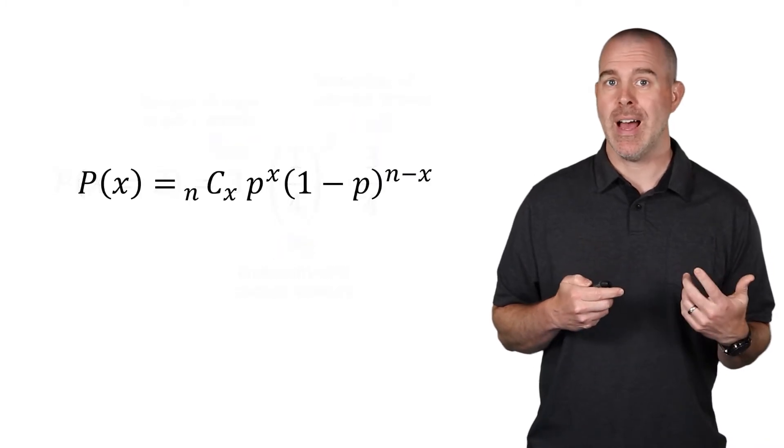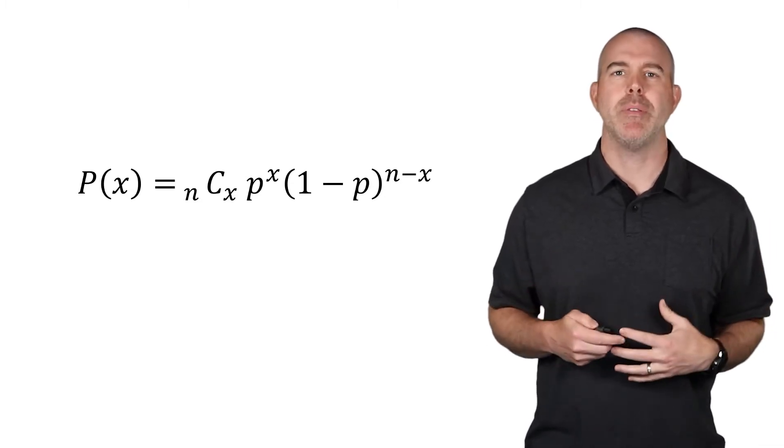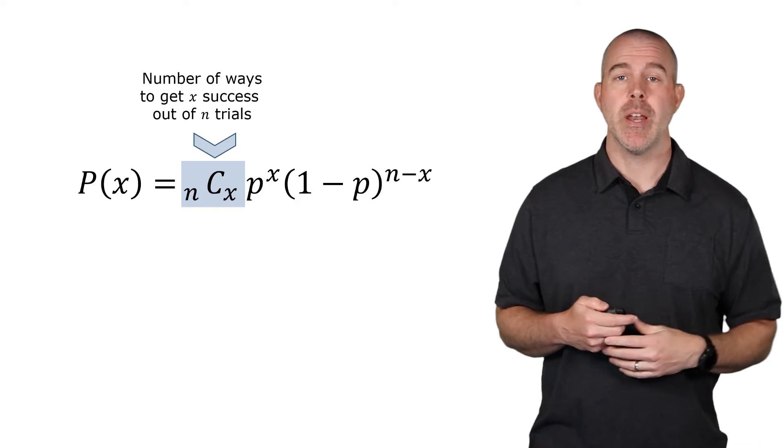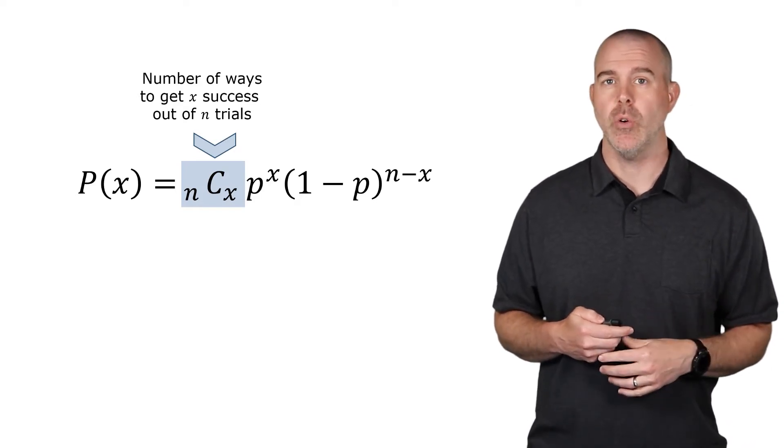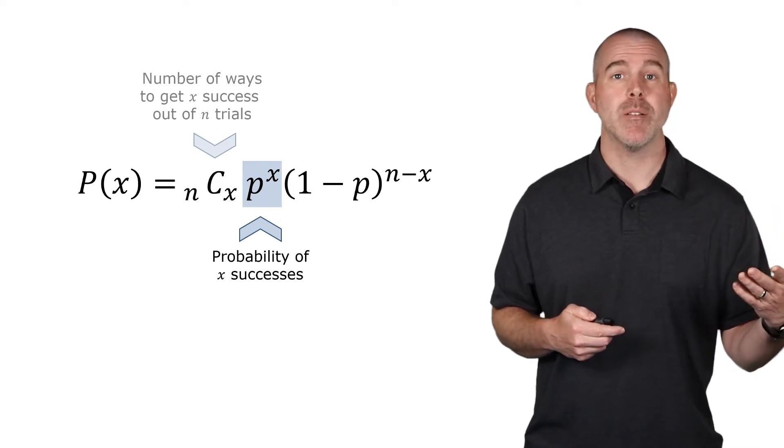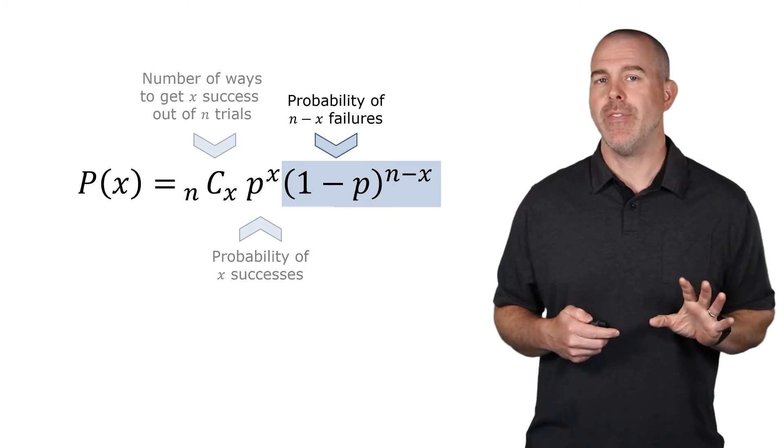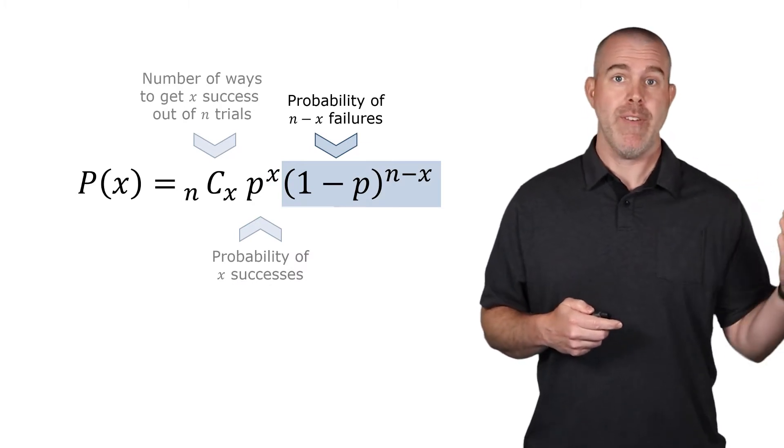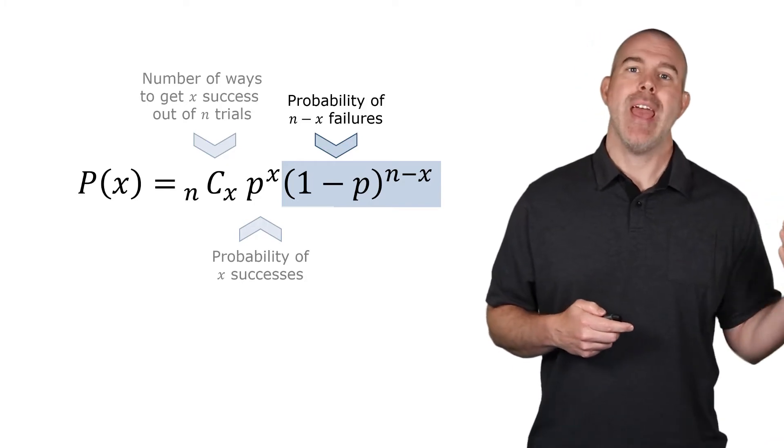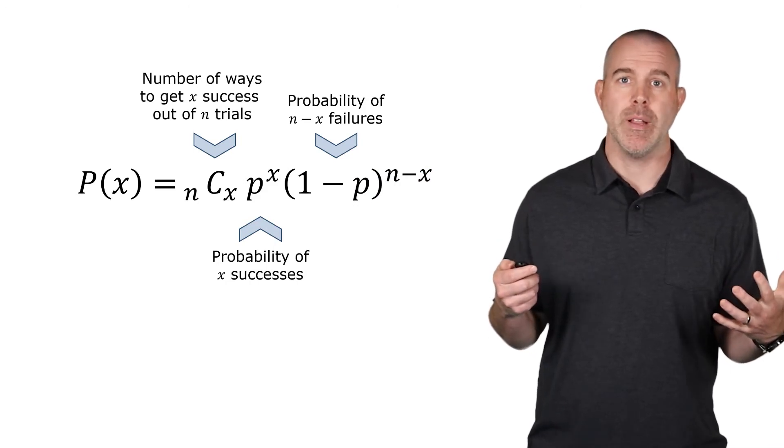If we generalize that, we get this formula with the same three parts, but obviously a little more complex in the general form. The nCx, this is the combination. It's the number of ways of choosing x successes out of n total. Then the p to the x, there are x successes. P is the probability of success, so that's p to the x. And then the last part is kind of the funkiest, but one minus p would be the probability of failure. And then if there are x successes, then there would be n minus x failures. And so this is the binomial probability formula.